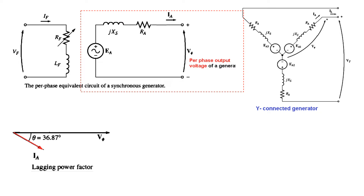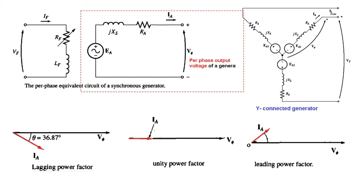This current is the armature current. Depending on whether this current is lagging, leading, or in phase with the voltage, we'll have different phasor diagrams and different interpretations. If the current is lagging, we show it like this — V-phase is taken as reference. For unity power factor, the current is in line with the voltage. For leading power factor, the current is drawn upward.